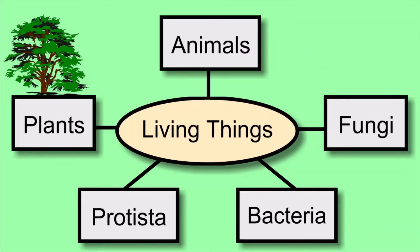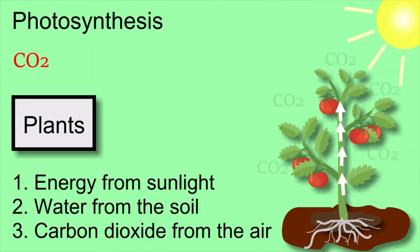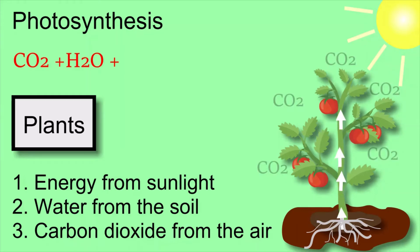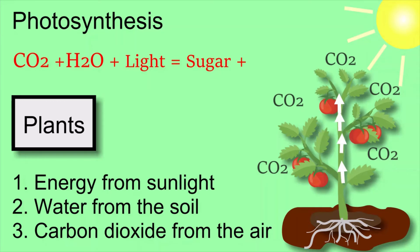All producers use water, carbon dioxide, and energy from sunlight to produce food. Photosynthesis is the process by which plants use the energy from sunlight, water from the soil, and carbon dioxide from the air to produce food and oxygen. This is a very important process.